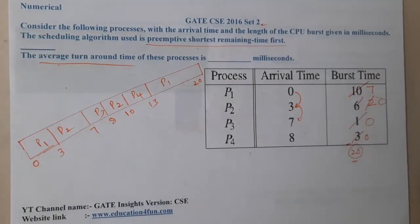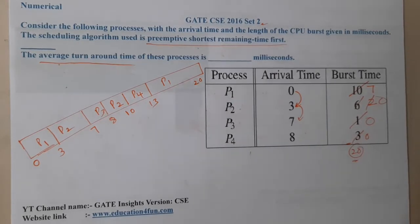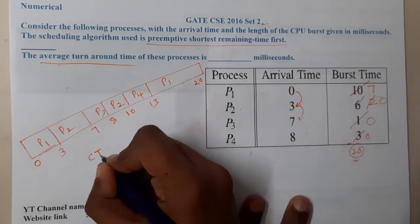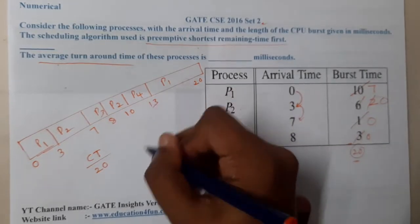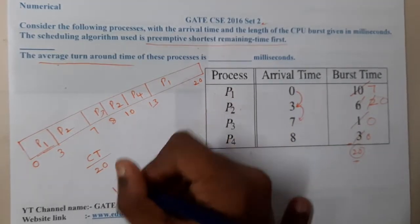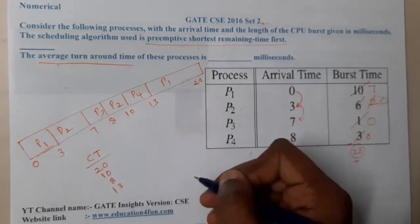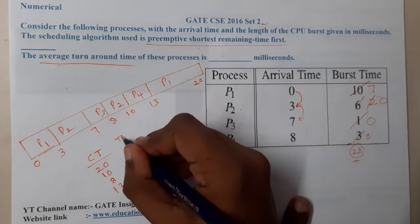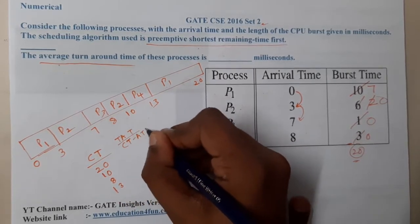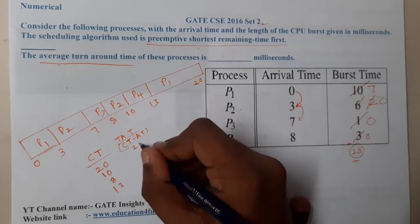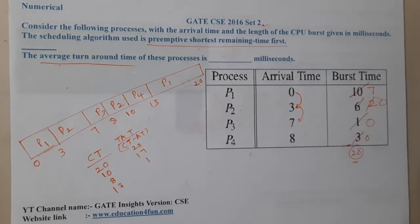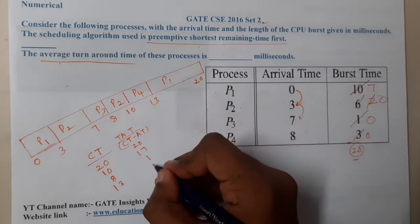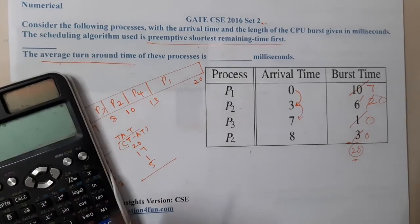They are asking for the average turnaround time. Turnaround time is completion time minus arrival time. The completion times are: P1 at 20, P2 at 10, P3 at 8, P4 at 13. So the turnaround times are: P1 = 20 − 0 = 20, P2 = 10 − 3 = 7, P3 = 8 − 7 = 1, P4 = 13 − 8 = 5. We can then directly calculate the average: 20 + 17 + 1 + 5...